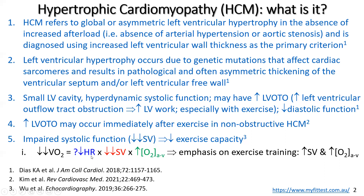Please do not use heart rates to prescribe exercise. Given the impaired stroke volume, we rely on an improvement or increase in the amount of oxygen extracted at the tissues — particularly mitochondrial usage of oxygen in the peripheral muscles. Our emphasis on exercise training is to try to reverse some of the impairment in stroke volume and, particularly, to improve oxygen extraction in the peripheral muscles. This should help prevent a very big impairment in oxygen utilization — VO2.